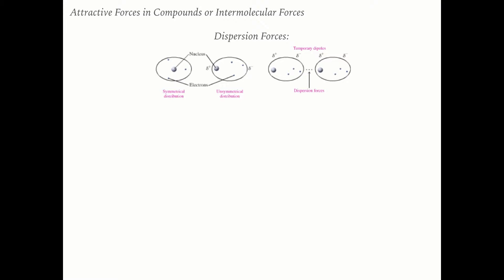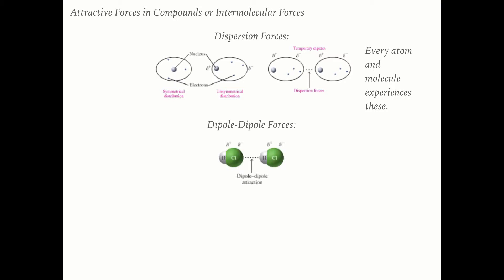Because London dispersion forces are temporary, they are our weakest type of intermolecular force, though they can be stronger with more electrons. Everything experiences LDF. Dipole-dipole forces apply only to polar molecules, which have a permanently partially positive end and a permanently partially negative end. When two polar molecules like HCl line up, the partial negative chlorine of one attracts the partial positive hydrogen of another — that is a dipole-dipole force.